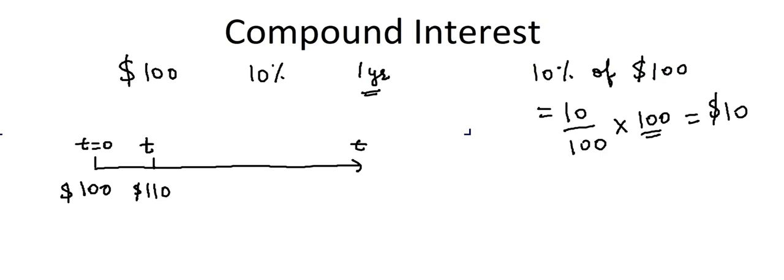Now what will happen after two years? To calculate the interest after two years, we have to take $110 and then take 10% of it. So 10% of $110 will be equal to $11.